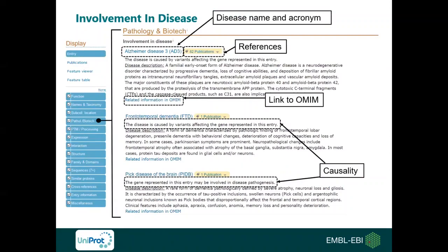Back to the protein entry of presenilin-1, you will find information on disease involvement in the pathology and biotech section. Here the diseases that the protein is involved in are listed, with the disease name and acronym, associated references, and a short description of the disease derived from literature and the OMIM database. You also find a link to OMIM below the disease description for further information. A note before the main disease description is used to describe the role of the gene or protein in disease pathogenesis, distinguishing when possible between causative, susceptibility, or modifier gene, according to literature and OMIM reports.